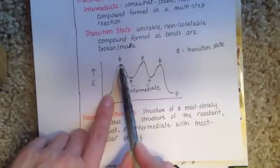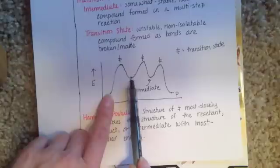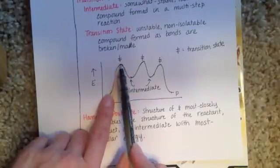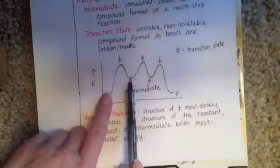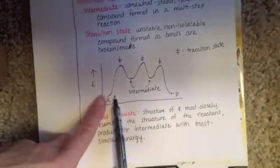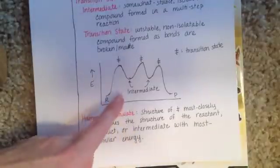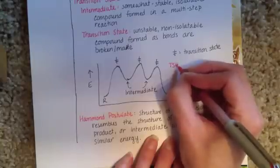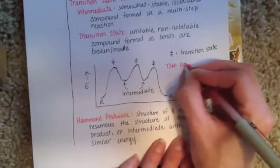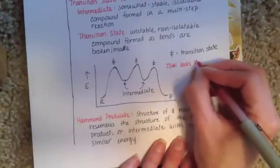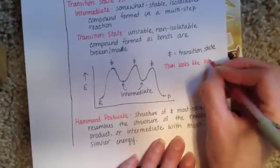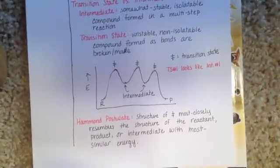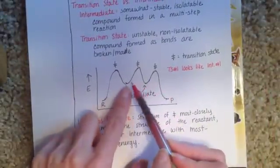Because transition state number one is closest in energy to intermediate number one — the reactant is quite a bit lower in energy — the structure of transition state number one is going to resemble the structure of intermediate number one more than it resembles the structure of the reactant. It will definitely look a little like both, but it more closely resembles intermediate number one.